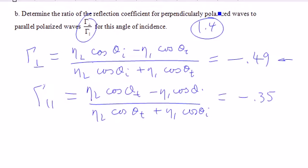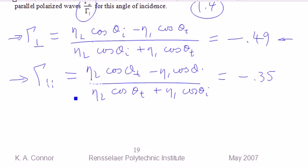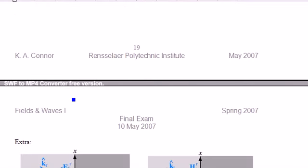In the last part of the problem where we were looking at oblique incidence, we had the expressions for the perpendicular reflection coefficient and the parallel reflection coefficient. These are reflection coefficients, as usual, that refer to the electric field, but we were not asked to determine the electric field for these two cases, nor were we asked to determine the magnetic field.